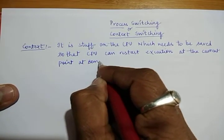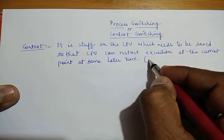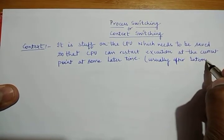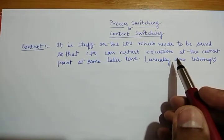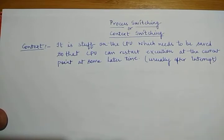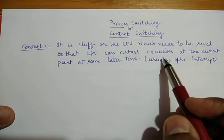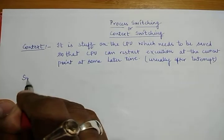The context needs to be saved so that the CPU can restart execution at the current point at some later time — generally after an interrupt. Suppose a process is running and an interrupt occurs; the process has to stop immediately. The part of the process executed till now needs to be saved so that when we restart execution again, it can resume from its current state.